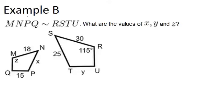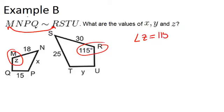So we are given angle R is 115 degrees. From the similarity statement, you can tell that R matches with M. And since M is angle Z, we know that angle Z has to equal 115 degrees.